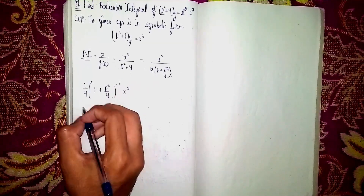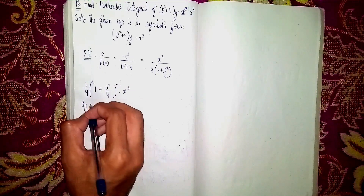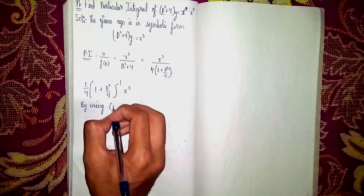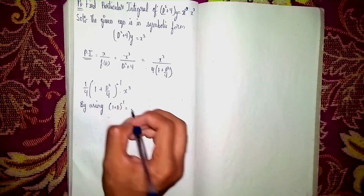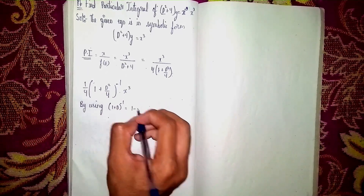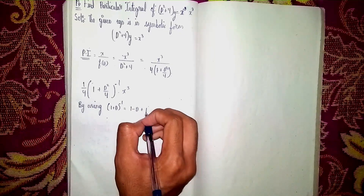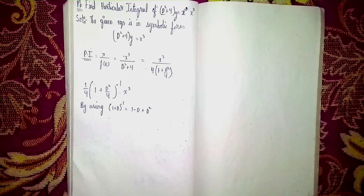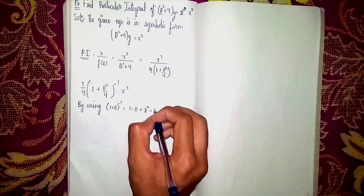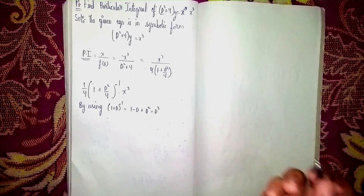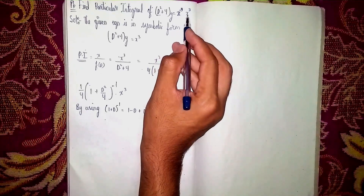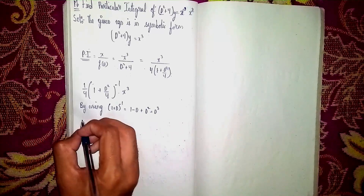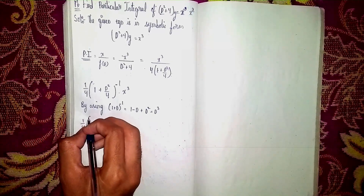Now by using the expansion: (1 + u)⁻¹ = 1 − u + u² − u³ + ... Here u = D²/4. We expand only up to the D³ term, because our function is x³ — so we need terms only up to the cube.